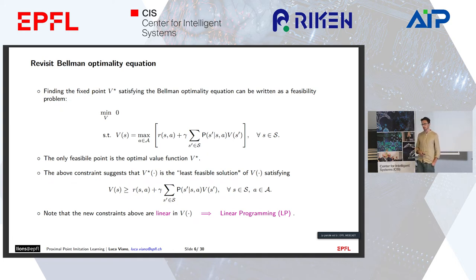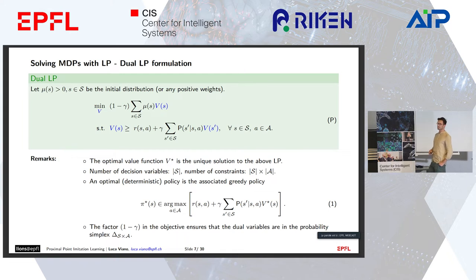However, the constraints are non-linear because of the max operator. If we want a linear program, we can replace them with an inequality, where we want the equality to be achieved only for the maximizing action. So we minimize the left-hand side. This gives us the dual LP where we minimize the expected value of the value function with linear inequality constraints. But we still have the problem of having decision variables proportional to the number of states, and to extract a greedy policy we need knowledge of the transition dynamics.